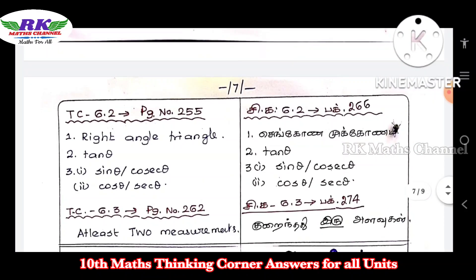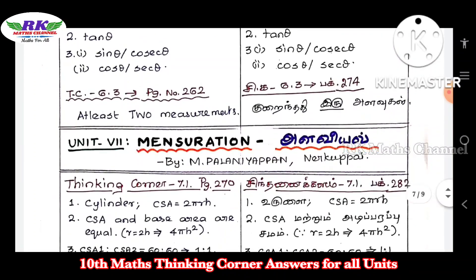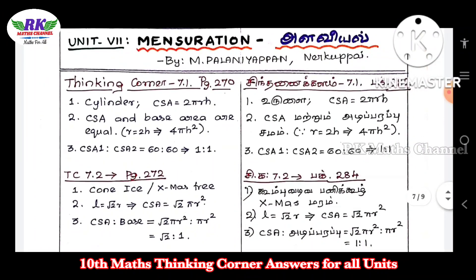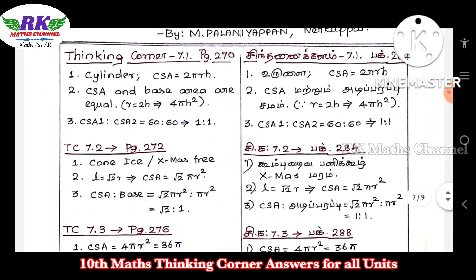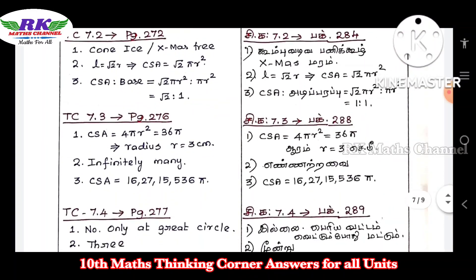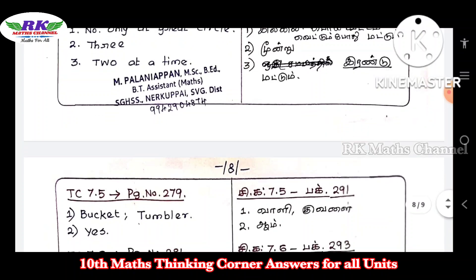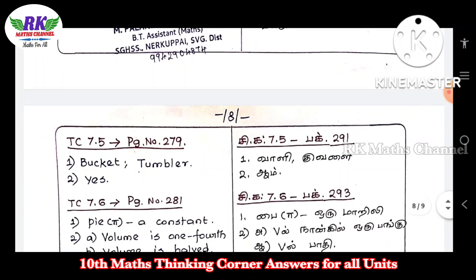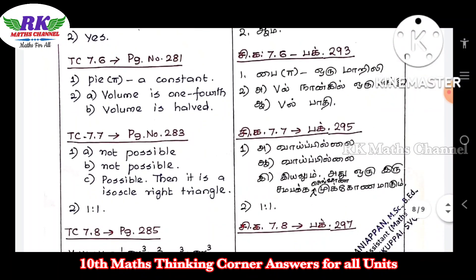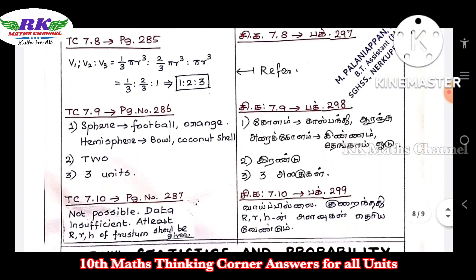Continuing Trigonometry: page number 255, page number 260, and other answers. Next, Mensuration: page number 270, 272, 276, 277, 279, 281, 283, 285, 286.